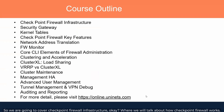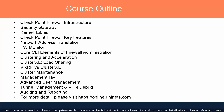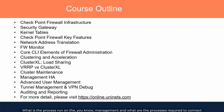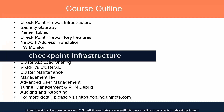We are going to cover Checkpoint firewall infrastructure, where we will talk about how the Checkpoint firewall works. The infrastructure includes GUI client, management, and security gateway. We will talk in more detail about these infrastructure components — what processes run on the gateway, what processes run on management, and what processes are required to connect the client to the management.